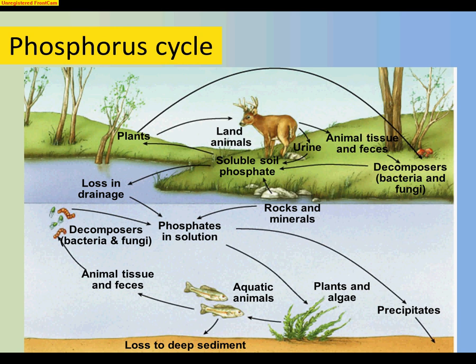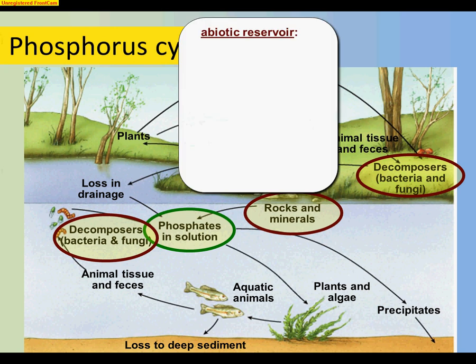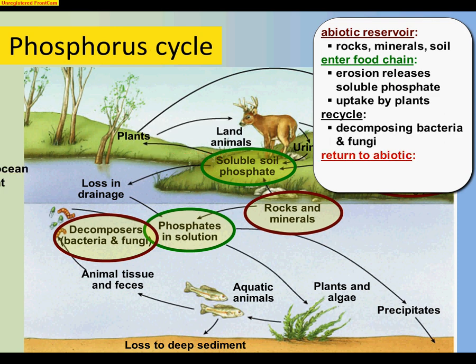The phosphorus cycle is unusual because phosphorus doesn't exist in the atmosphere — it's locked up in rocks and minerals. Those rocks and minerals are soluble and can dissolve, releasing phosphate directly into soil or into lakes. Bacteria help convert it into a usable form for plants, though some soluble phosphorus is taken up directly. The four key points: abiotic reservoir is rocks and minerals; it enters the food chain by erosion and uptake by plants; it gets recycled by bacteria and fungi; and then it's returned to the abiotic world.